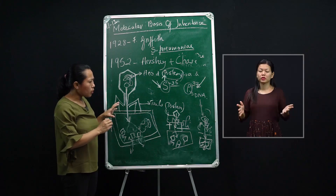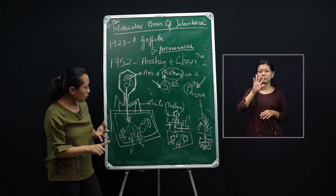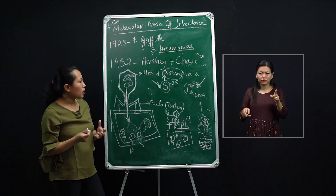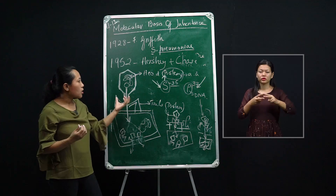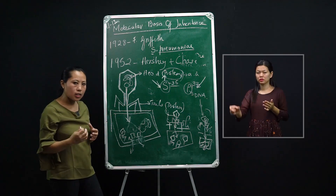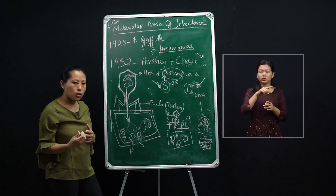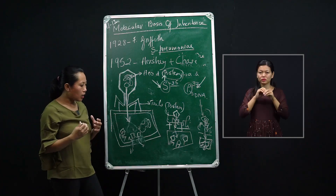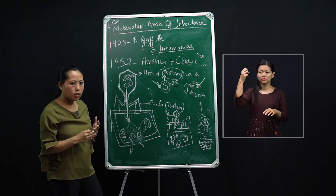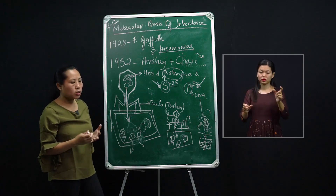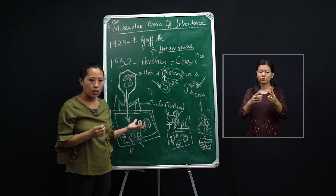From all of these experiments — from 1928 by Griffith, from 1944 conducted by Avery, MacLeod and McCarty, and from 1952 conducted by Hershey and Chase — experiments were done to determine the chemical nature of the genetic material. Finally, it was Hershey and Chase who could experimentally prove that it is the DNA which is the genetic material and not the proteins, because DNA is able to transfer information to the progenies from parent to offspring and it is stable. These three experiments prove that DNA — and neither proteins nor RNA — is the genetic material.